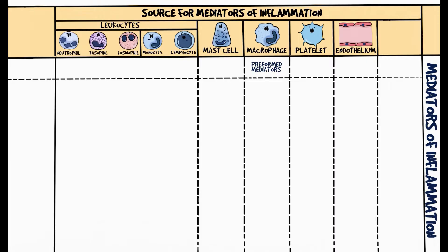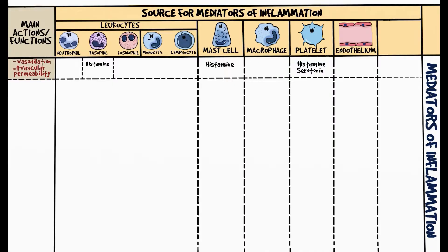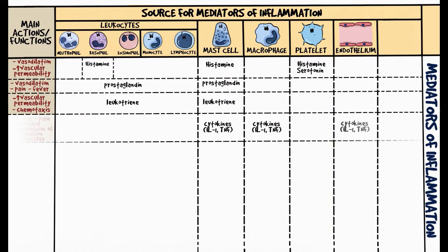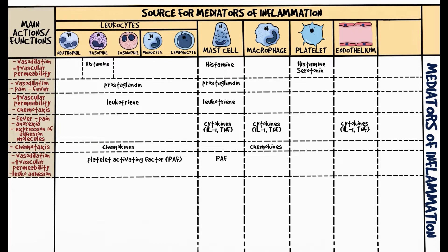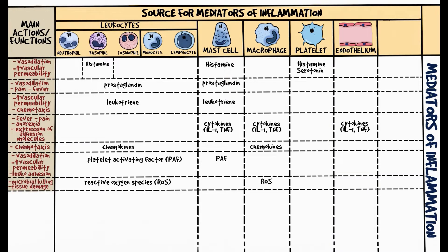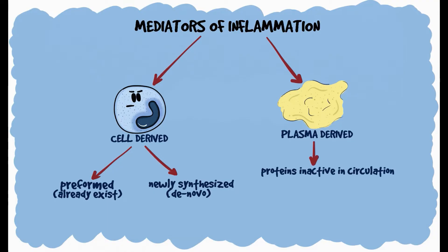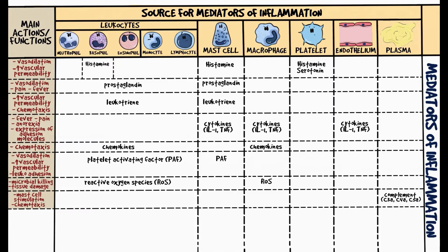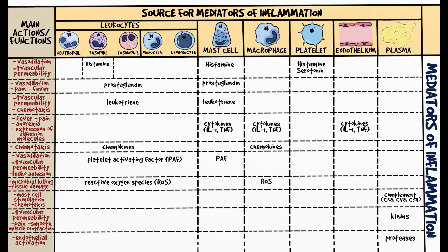Cell-derived preformed mediators of inflammation are histamine and serotonin, packed in granules of mast cells and platelets. Most of the factors are newly synthesized and consist of various chemical mediators ranging from eicosanoids like prostaglandins and leukotrienes, pro-inflammatory cytokines like interleukin-1 and tumor necrosis factor alpha, chemokines, platelet activating factor and even free radicals like reactive oxygen species. Those factors that are plasma-derived are proteins that are inactive in the circulation. These proteins could be stimulated by various factors and be activated, which then could trigger a cascade of reactions. Plasma-derived mediators are usually complement proteins C3A, C4A and C5A, kinins and proteases activated during coagulation.